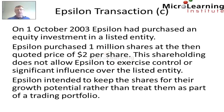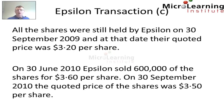The details of this transaction are that on the 1st of October 2003, Epsilon had purchased an equity investment in a listed entity. Epsilon purchased 1 million shares at the then quoted price of $2 per share. This shareholding does not allow Epsilon to exercise control or significant influence over the listed entity. Epsilon intended to keep the shares for their growth potential rather than treat them as part of a trading portfolio. All the shares were still held by Epsilon on the 30th of September 2009.